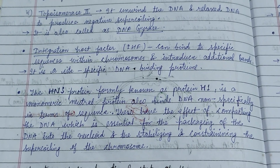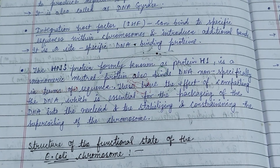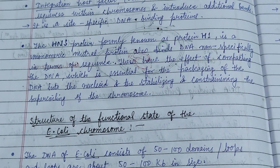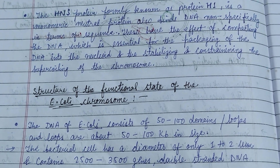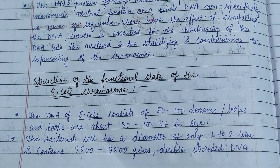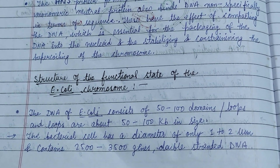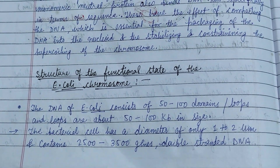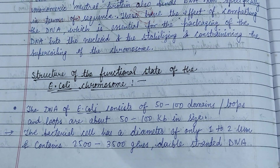Topoisomerase 2 is also called DNA gyrase, and it relaxes DNA to produce negative supercoiling. The H-NS protein, formerly known as protein H1, is a monomeric neutral protein that also binds DNA non-specifically in terms of sequence. It has the effect of compacting the DNA, which is essential for packaging the DNA into the nucleoid and stabilizing and constraining the supercoiling of the chromosome.